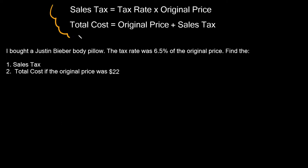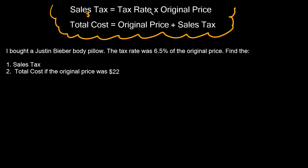The two main equations we're going to use are these two right up here. The first one says that sales tax is equal to the tax rate times the original price. The sales tax is in dollars, and the tax rate is a percentage — but whenever we plug in a percentage into our equation, we have to turn it into a decimal. Then we multiply that by the original price, which is also in dollars. The second equation says that the total cost equals the original price plus the sales tax, all in dollars.